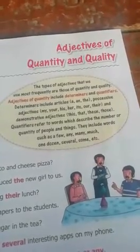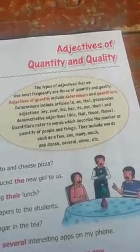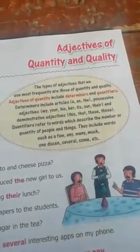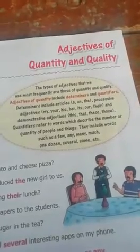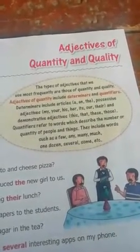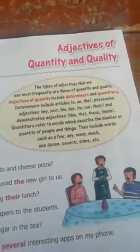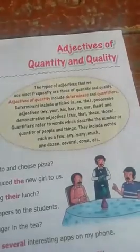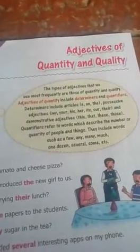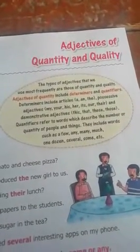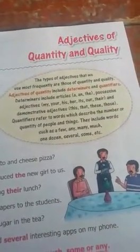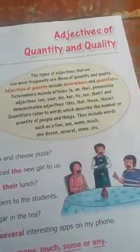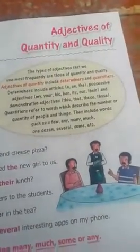Quantifiers refer to words which describe the number or quantity of people and things. They include words such as: a few, any, many, much, one dozen, several, some, etc.